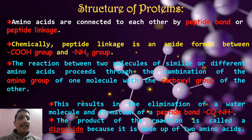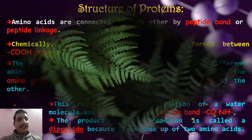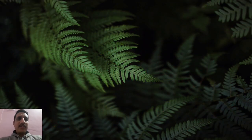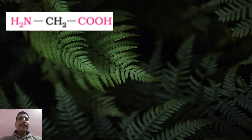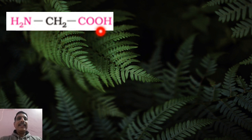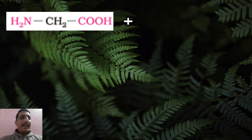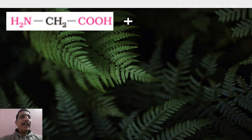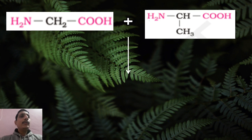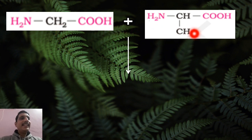Why is it called a dipeptide? Because it is made up of two amino acids. Let us see the chemical reaction and structural aspect of dipeptide formation. This is amino acid glycine: NH₂–CH₂–COOH. Another amino acid is alanine. I have taken two different amino acids — this is glycine and this is alanine.